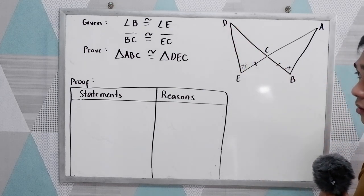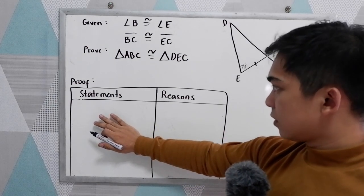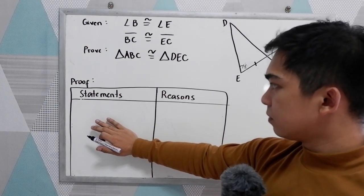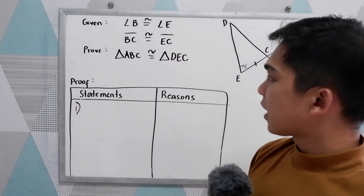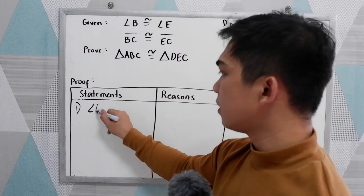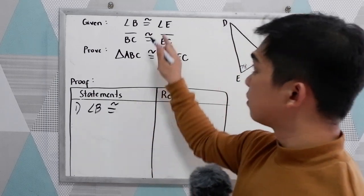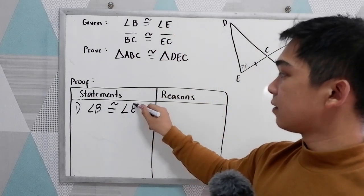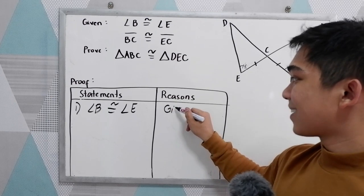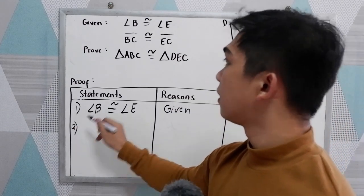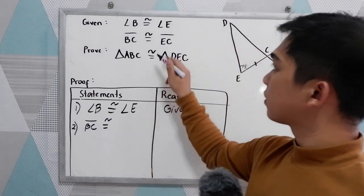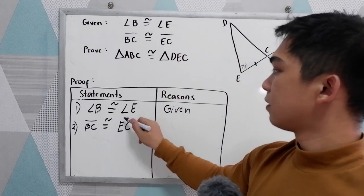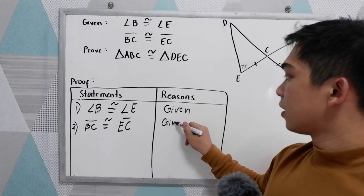Now, in our column for the statement, write all the givens. First, angle B is congruent to angle E. Our reason: that is given. Second, BC is congruent to EC. That is also given.